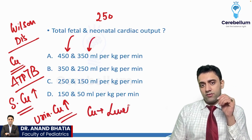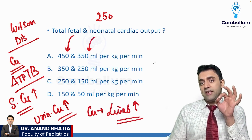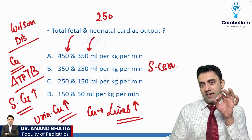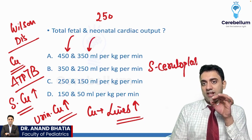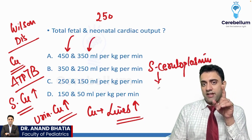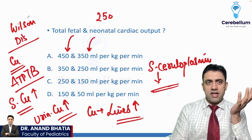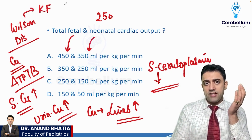Only one thing decreases — that is the serum ceruloplasmin level. Only this level decreases; everything else increases in a case of Wilson disease. And we see a KF ring.